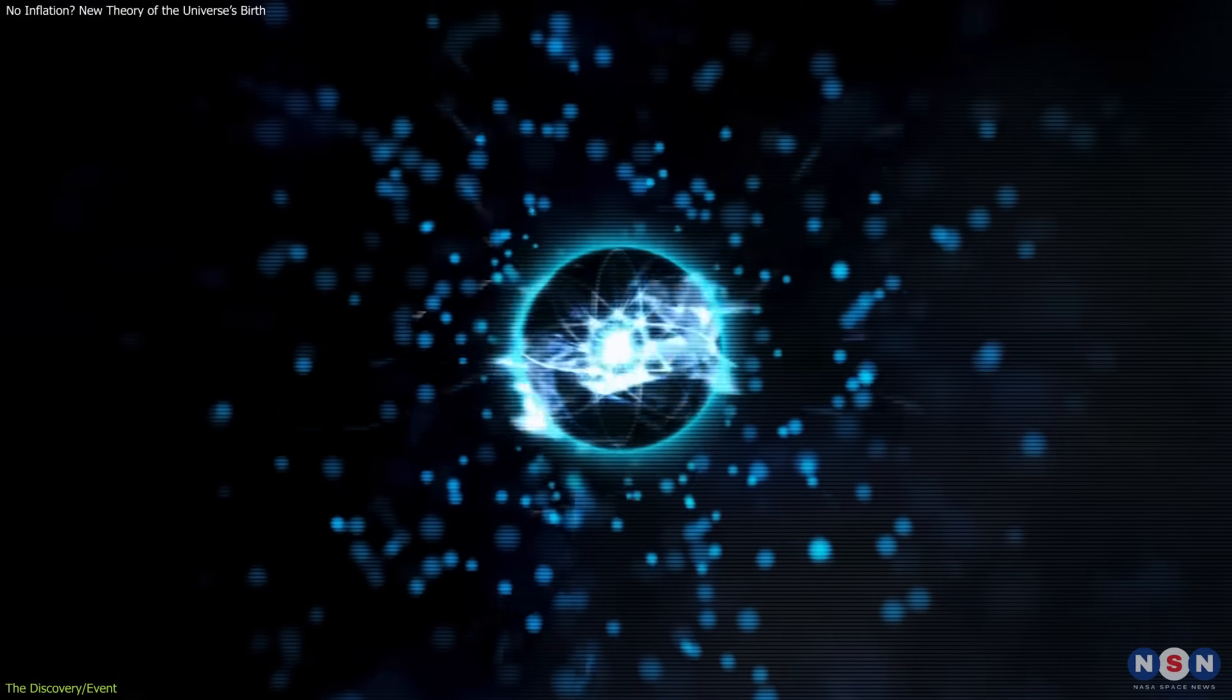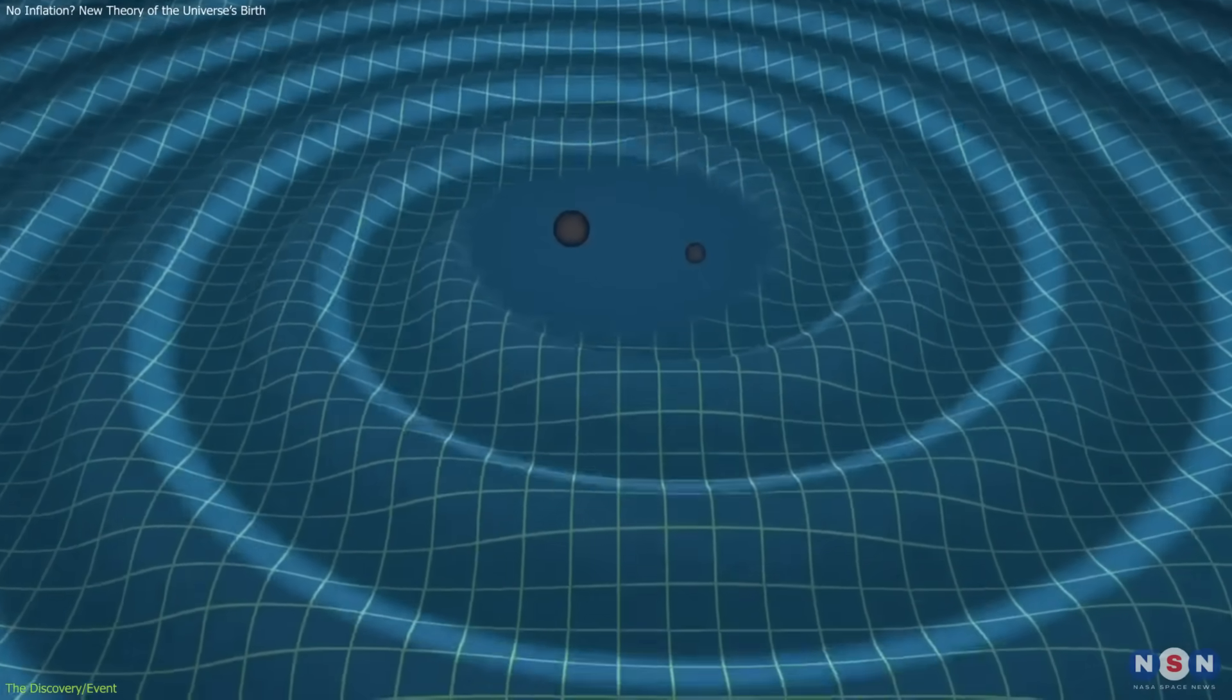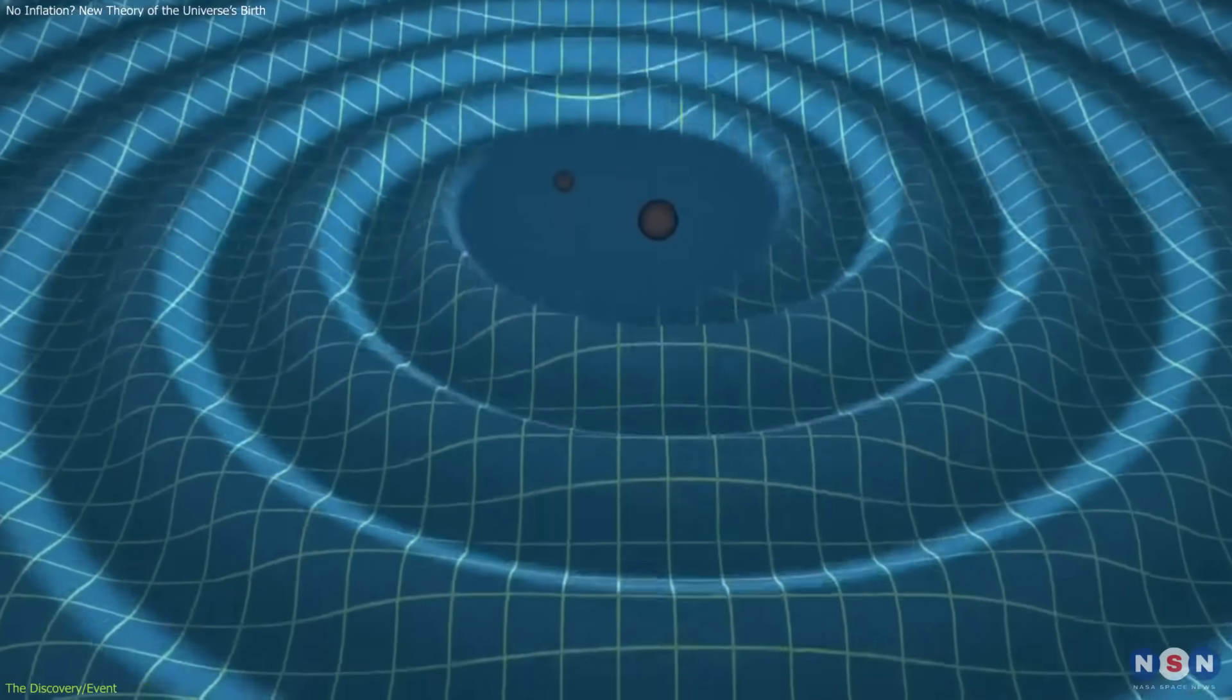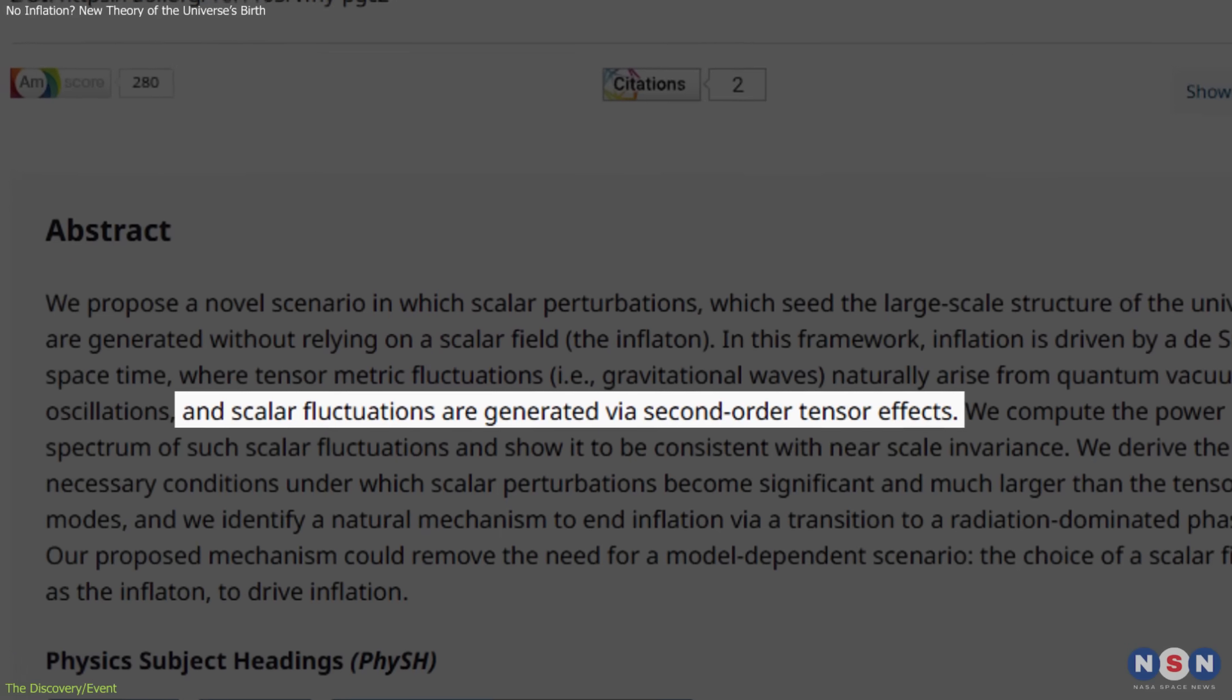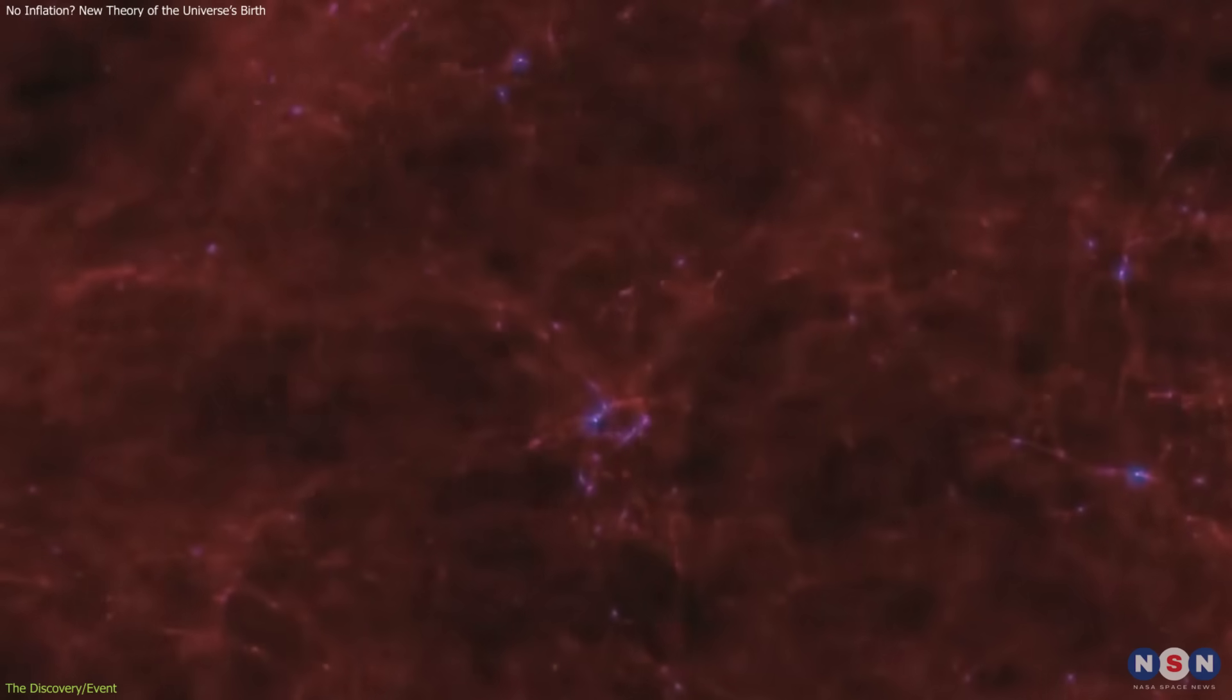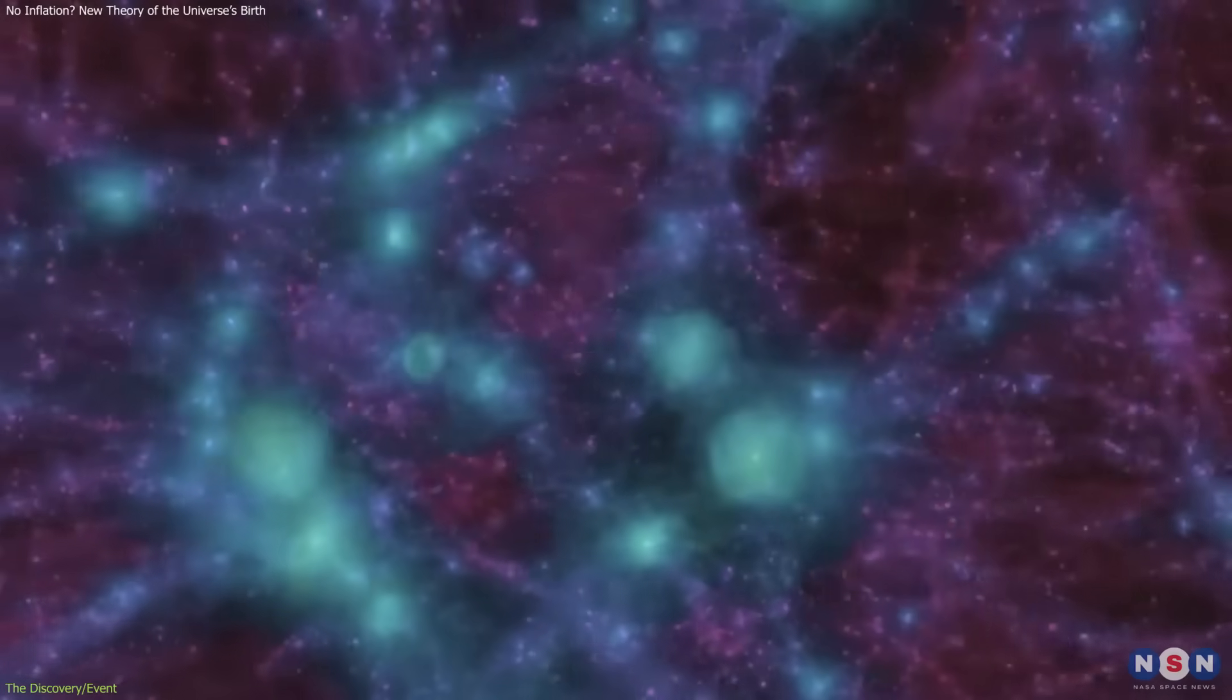Within this framework, the team examined quantum fluctuations. These naturally produce gravitational waves, or tensor perturbations. When the mathematics is extended to second order, those waves generate scalar perturbations, variations in density, and it is those density variations that become the seeds of cosmic structure.